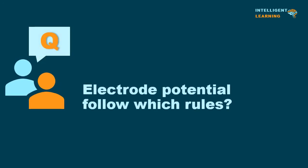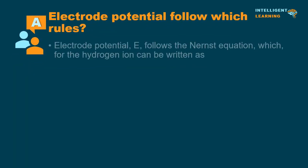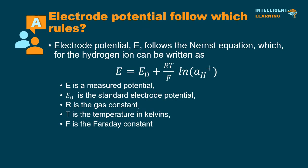Electrode potential follows which rules? Electrode potential, E, follows the Nernst equation, which for the hydrogen ion can be written as E = E0 + (RT/F) × log[H⁺], where E is the measured potential, E0 is the standard electrode potential, R is the gas constant, T is the temperature in Kelvins, and F is the Faraday constant.